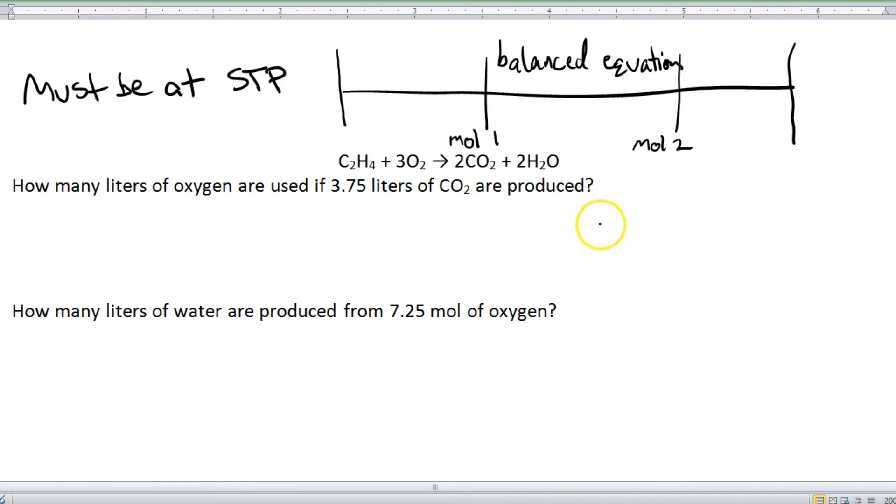Alright, and there are two different ways that we can look at this. So let's take a look at this first question so you can kind of get an idea of what I'm talking about here. It says, how many liters of oxygen are used if 3.75 liters of CO2 are produced? And obviously, we're using this equation right here. So I'm going to start with my given, 3.75 liters of CO2 over 1.